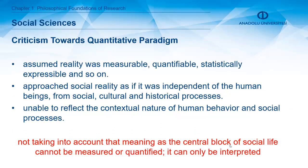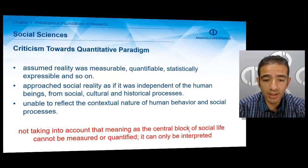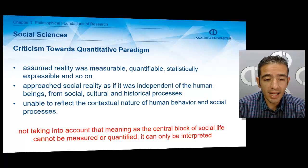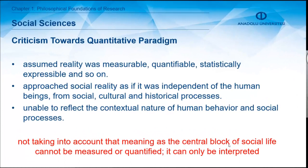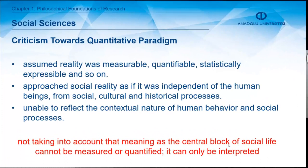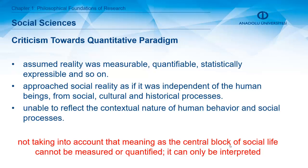In time, criticism arose toward the quantitative paradigm. Positivists thought that everything — even reality — was measurable, quantifiable, and statistically expressible. They approached social reality as if it were independent of human beings and social, cultural, and historical processes. Crucially, positivist scientists did not take into account the issue of meaning, which is central to social life. Since individuals attach meaning to phenomena, and positivism ignored this, the quantitative paradigm was criticized in social sciences.